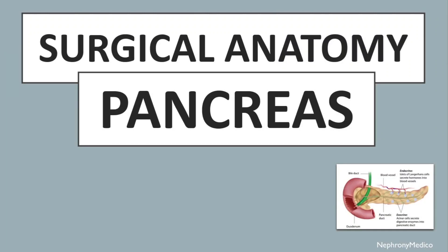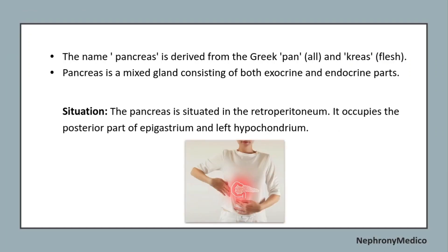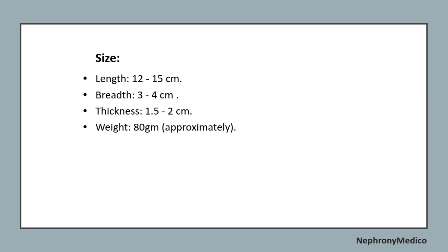Let's talk about the surgical anatomy of the pancreas. The pancreas is a mixed gland consisting of both exocrine and endocrine parts. It is situated in the retroperitoneum and occupies the posterior part of the epigastrium and left hypochondrium. Its size is about 12 to 15 cm in length, 3 to 4 cm in breadth, thickness is 1.5 to 2 cm, and it is approximately 80g in weight.